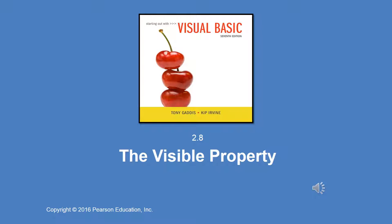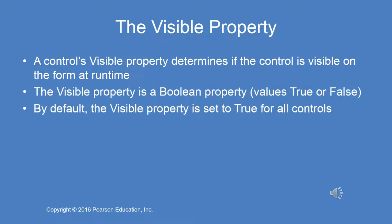Many controls are not visible at certain times. For example, when the form is first displayed during runtime there could be controls that are not visible — that's done with the visible property. The visible property determines whether or not the control is visible at runtime, and it can be changed later. The visible property is a boolean property, which means it can only be true or false: true means it is visible, false means it is not. When you create a new control and place it on a form, the visible property is set to true by default. Only if you want it to be hidden when the form runs do you need to change this.